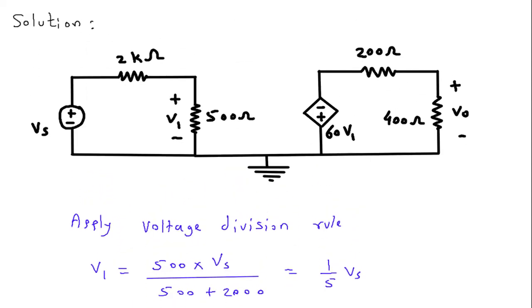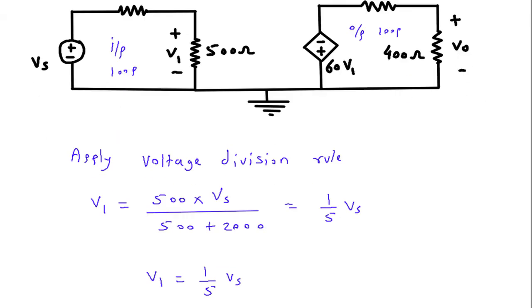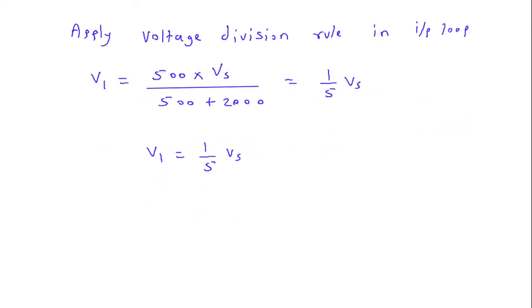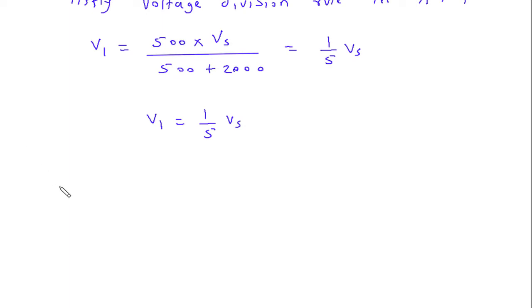Now we will apply, let's say this is input loop. This is output loop. This was in input loop. Now we will apply voltage division rule in output loop.